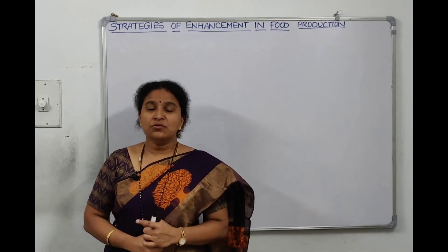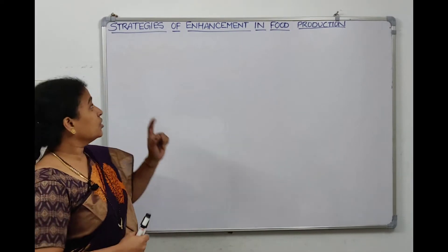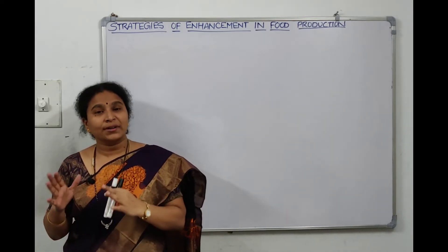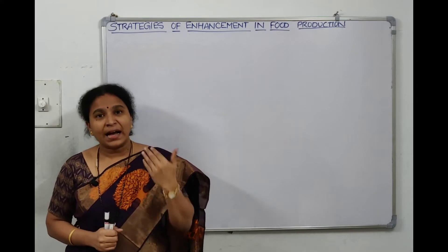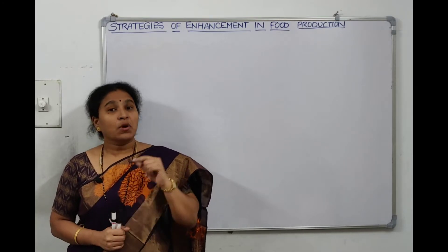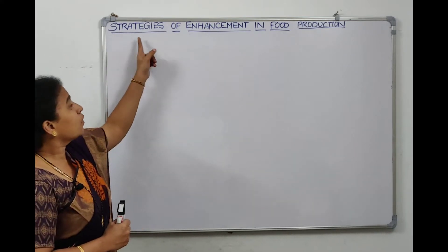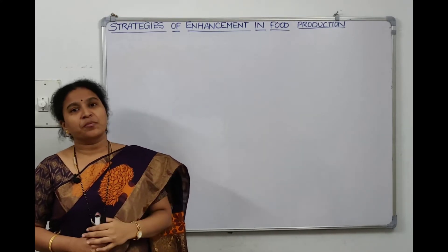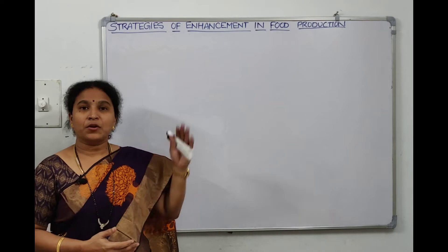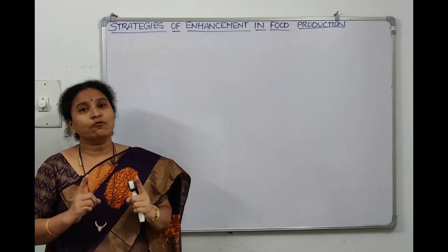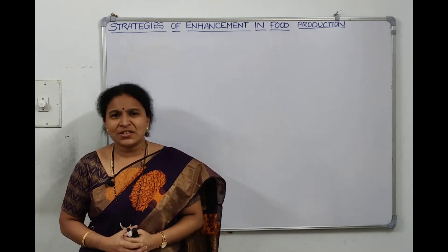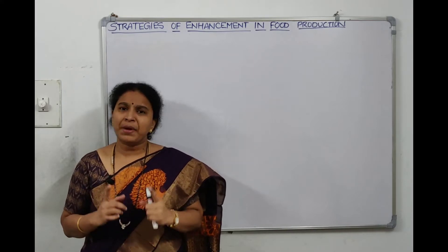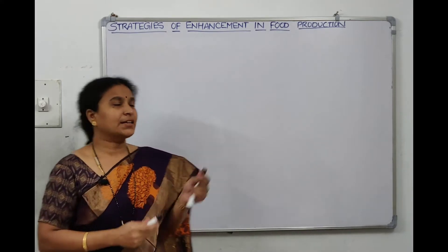Welcome everyone. We're going to start a new chapter today — NCERT Class 12, Chapter 9: Strategies of Enhancement of Food Production. In this chapter, we'll cover the botany part related to plant breeding and the zoology part related to animal husbandry. The chapter is about the techniques and strategies we use to enhance food production. Food production must be increased because population is increasing dramatically — this is a major necessity.